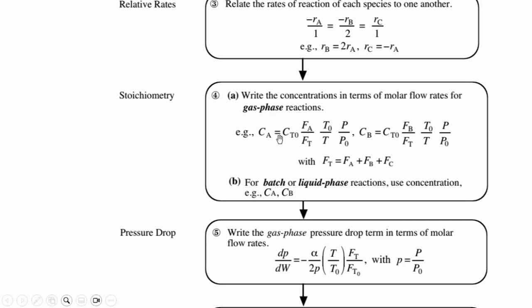Moles and molar flow rates is the basis of isothermal design in this chapter, while conversion was the basis in the previous chapter. Accordingly, CA = CT0·(FA/FT)·(T0/T)·(P/P0), where P0 is the initial pressure and P is the final pressure.